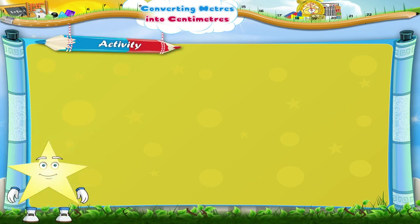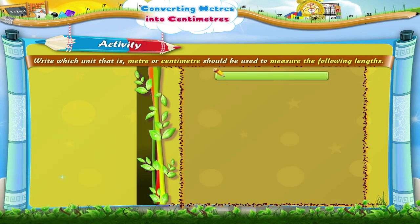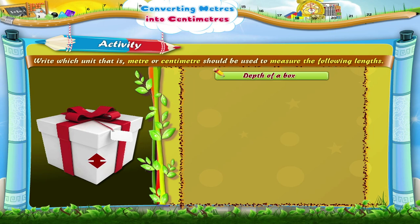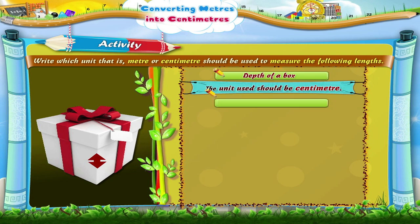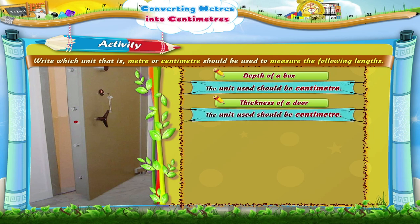Let us do another activity. Write which unit — that is, meter or centimeter — should be used to measure the following lengths. Depth of a box: the unit used should be centimeter. Thickness of a door: the unit used should be centimeter.